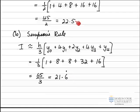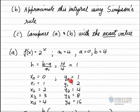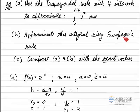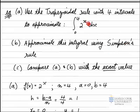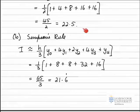The two approximations are slightly different, so we need to work out which one is closer to the exact value. Part C requires us to compare both approximations to the exact value of the integral of 2 to the x.